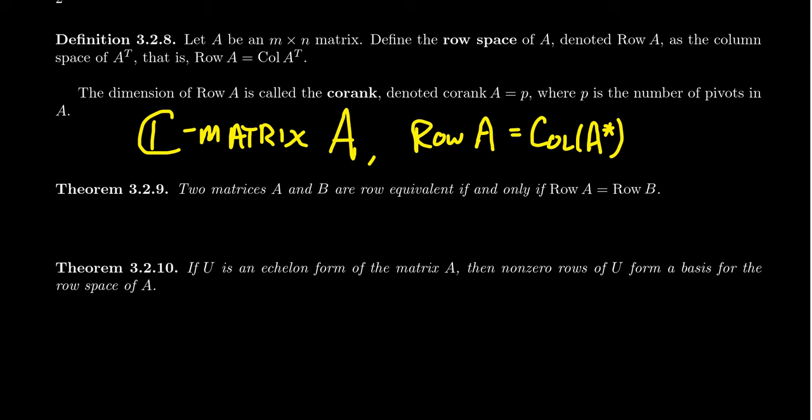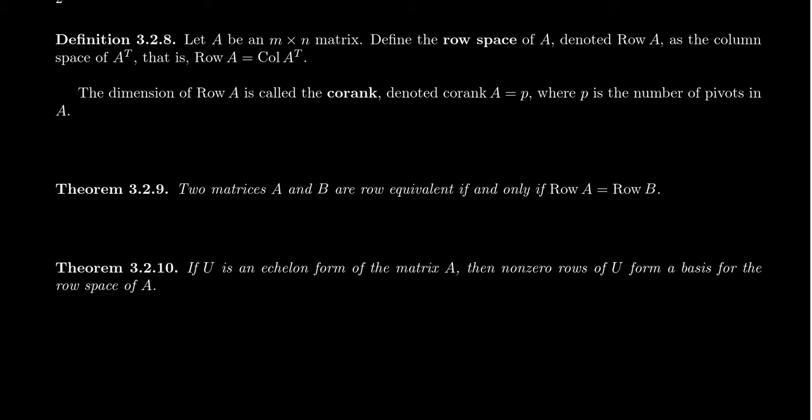For a real matrix, conjugation is invisible, so you can think of it as just taking the span of the rows. The row space is, in some respect, a complementary space to the column space. As such, we call the dimension of the row space the co-rank. This is similar to how in trigonometry we have cosine, cotangent, cosecant — the prefix 'co' is short for complementary. So the co-rank is the complementary dimension to rank, which is the dimension of the column space.